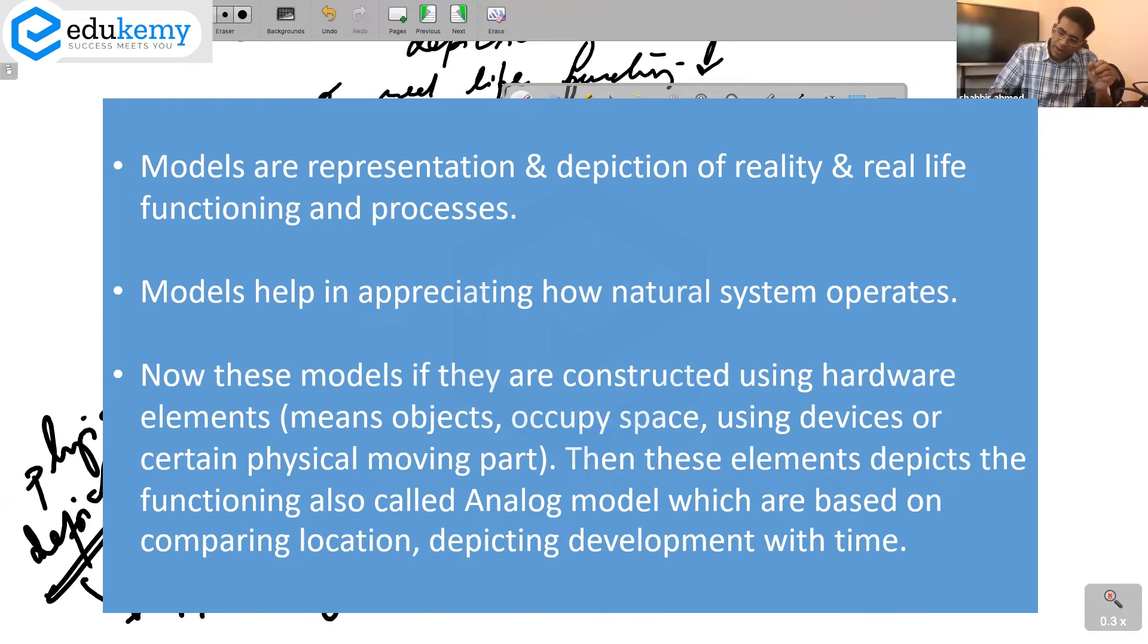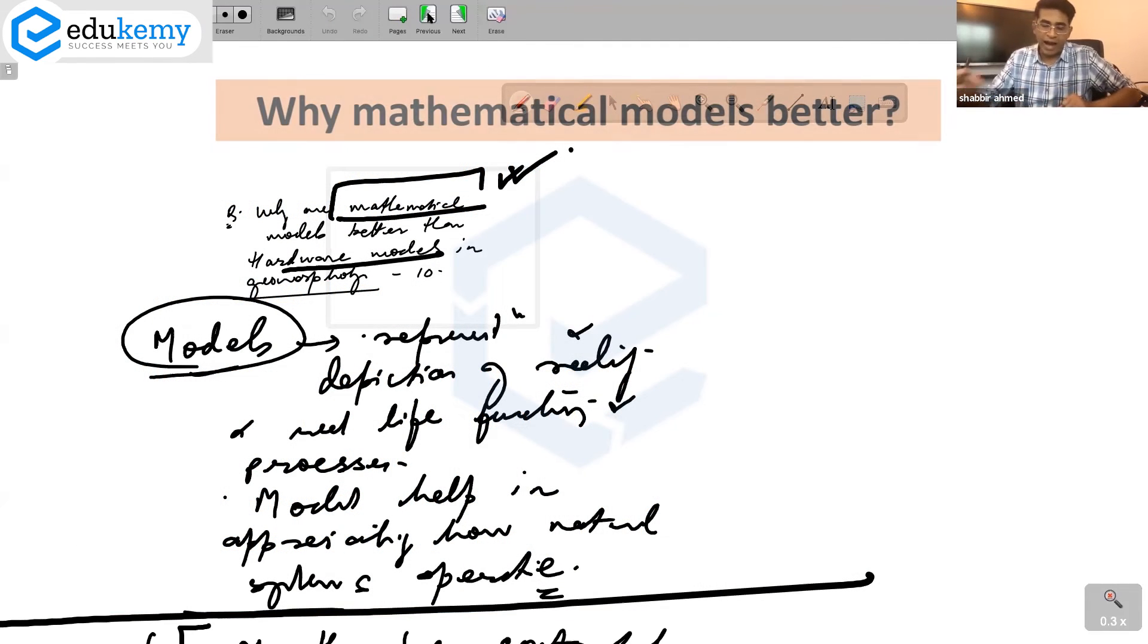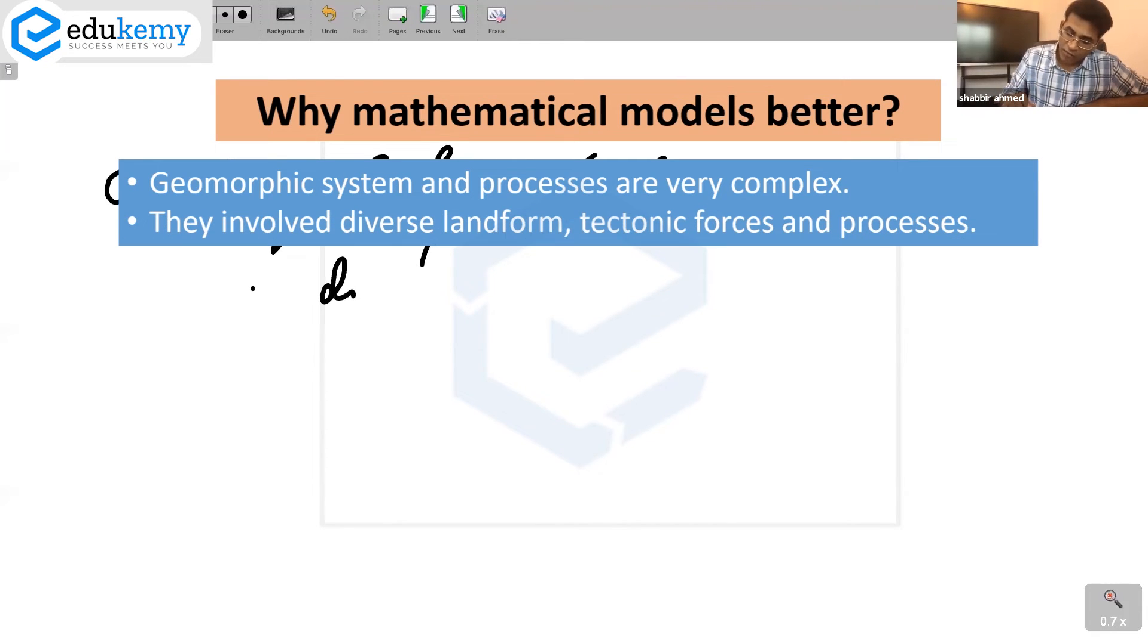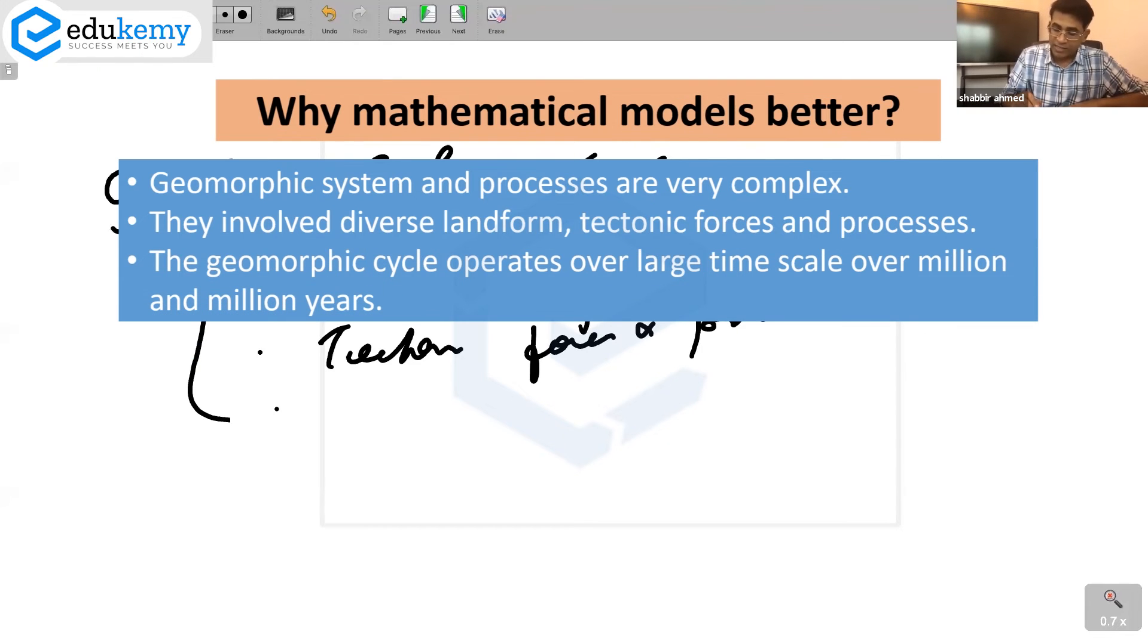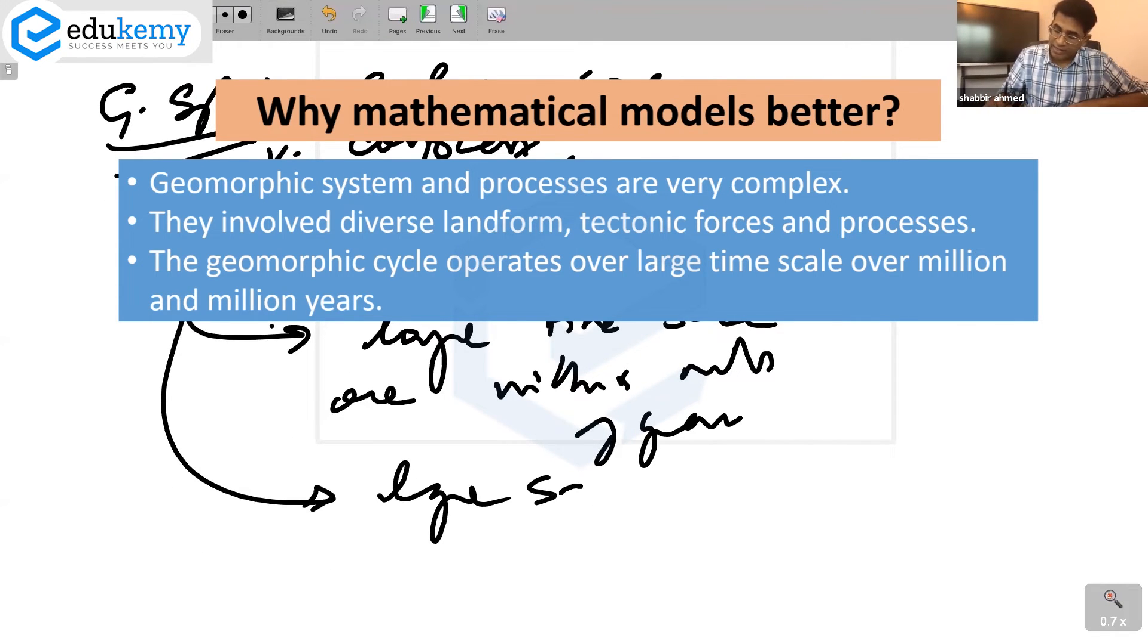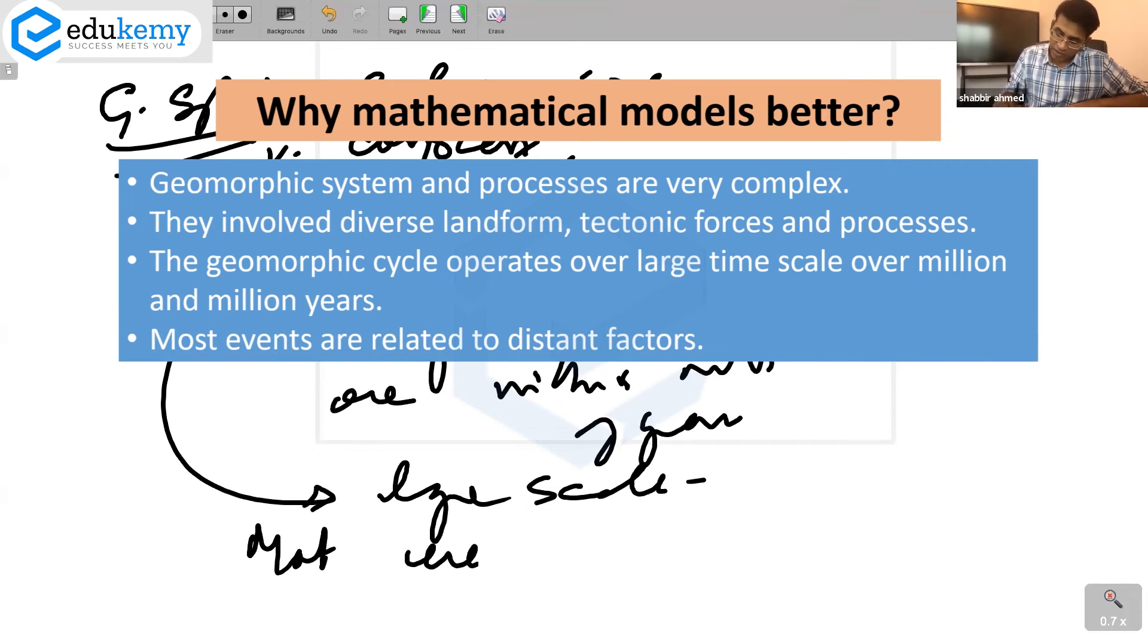So why are mathematical models better? Geomorphic systems and geomorphic processes are very complex. They involve diverse landforms, tectonic forces and processes. The geomorphic systems operate over large time scales, over millions and millions of years. They operate over large scales.